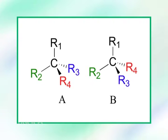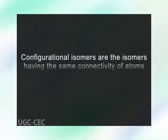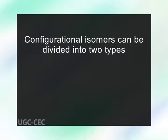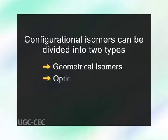A brief introduction about stereoisomers. Stereoisomers are isomers which have the same connectivity of bonds but differ in the relative position of their atoms in space. Stereoisomers are different molecules and cannot be inter-converted without breaking of bonds, hence they have different configurations. Configurational isomers have the same connectivity of atoms but a different three-dimensional arrangement of atoms or groups in space. Configurations cannot be changed unless bonds are broken. Configurational isomers are divided into two types: geometrical isomers and optical isomers.